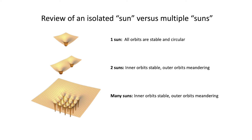You might remember these plots from the previous videos. These are depictions of gravitational potential energy. In the first situation, we have a single star forming a gravity well, and the orbits of the planets were stable and circular. When a second star was added to the system, the inner planets orbiting very close to their respective stars mostly remained in their original orbits, whereas those originally in higher orbits tended to start wandering around the entire two-star system rather than moving around just one star.